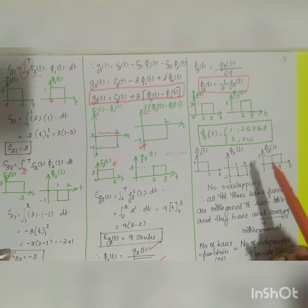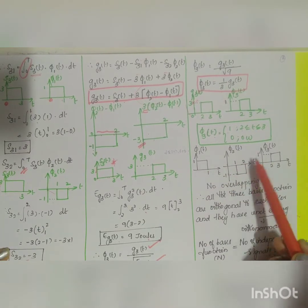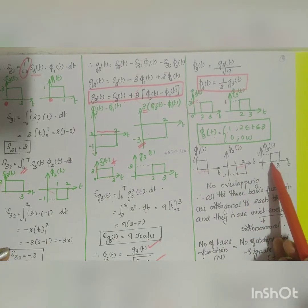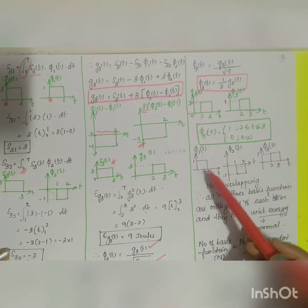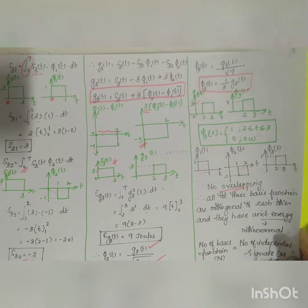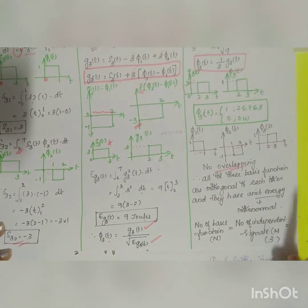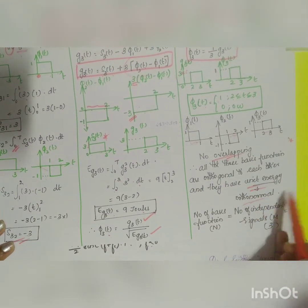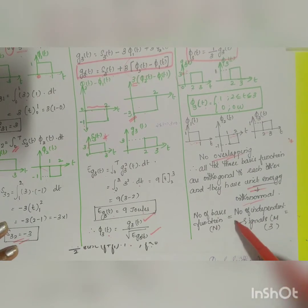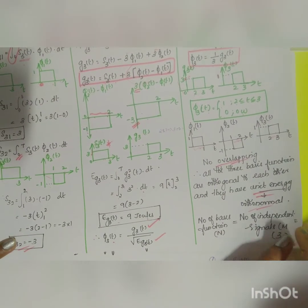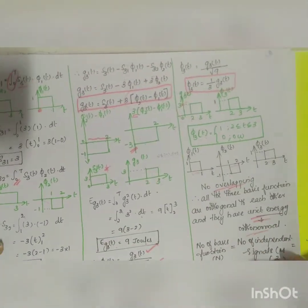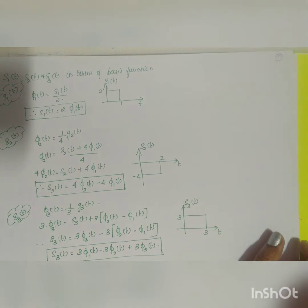We verify orthogonality: φ1(t) spans 0 to 1, φ2(t) spans 1 to 2, and φ3(t) spans 2 to 3 — there is no overlapping area. So all three basis functions are orthogonal to each other, and each has unit energy, confirming they are orthonormal. The number of basis functions equals the number of independent signals, which is 3.